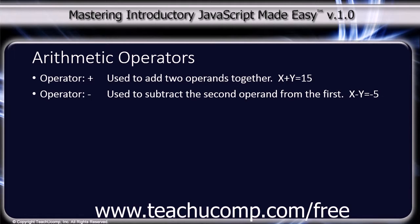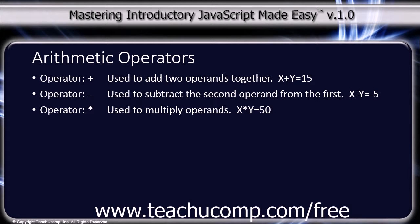The next operator is the hyphen or minus sign, which is used to subtract the second operand from the first. x minus y equals negative 5. The next operator is the asterisk, which is used to multiply operands. For example, x times y equals 50.